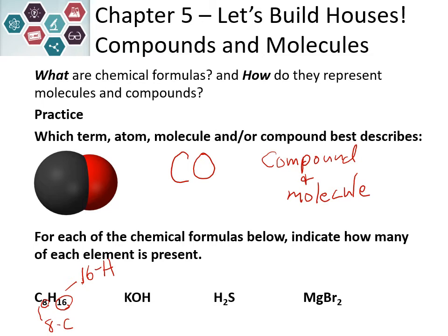In KOH, we have one potassium, one oxygen, and one hydrogen. When there is no subscript written, we assume that it's one. In H₂S, we would have two hydrogens and one sulfur. For magnesium bromide, MgBr₂, we would have one magnesium and two bromide. We're told this by our subscript.